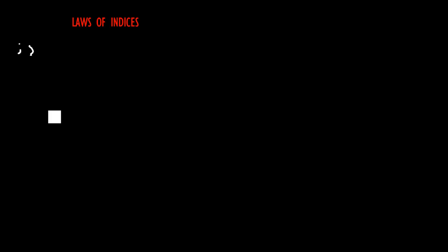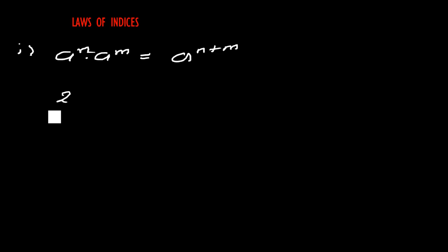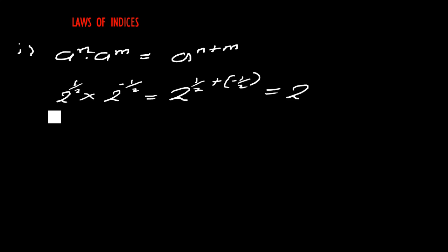All indices satisfy the following rules. The first rule: when you have the same base with the multiplication sign, you add the indices. For example, when you have a^(1/2) multiplied by a^(-1/2), same base with multiplication sign, you add the indices, so a half plus negative a half is zero.